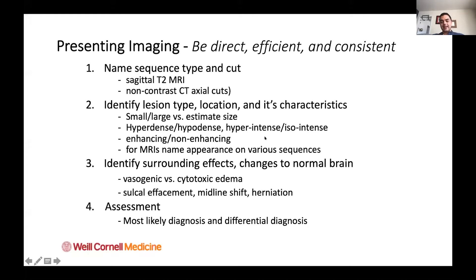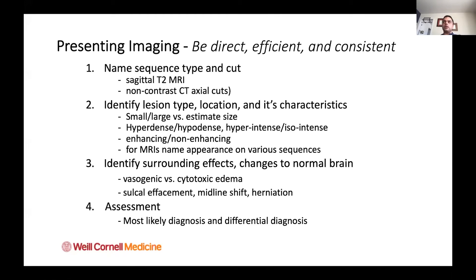Is it hyperintense or isointense? If it looks similar to brain but slightly abnormal, you can say isointense or isodense. Is it enhancing or non-enhancing? For MRIs, you want to talk about how it appears on various sequences. For example, a T1 post-contrast enhancing lesion that shows signs of diffusion restriction — that's already leading you to think this could be a GBM.